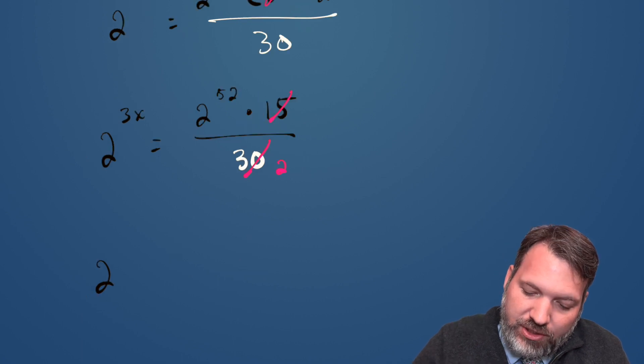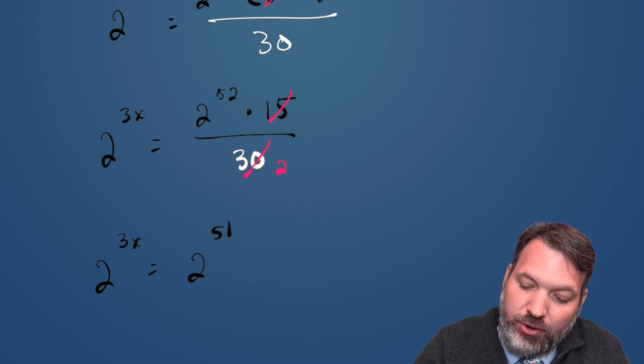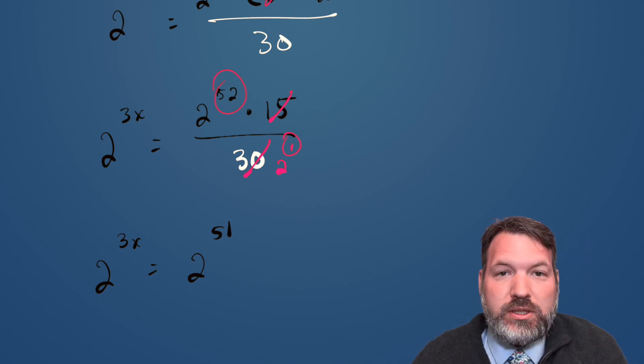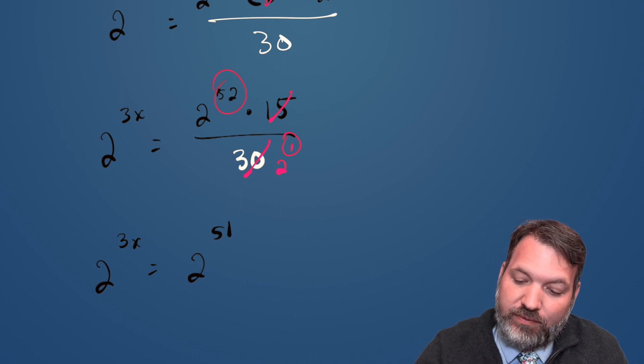And finally, we get 2 to the 3x power is equal to 2 to the 51st power, using, once again, our power rules, subtracting those exponents, because we are now dividing powers of 2.